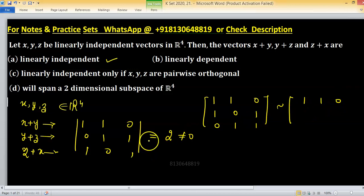I change second and third row and put it in this matrix. So 1,1,0 and apply elementary row operation 0,-1,1, third row is 0,1,1.